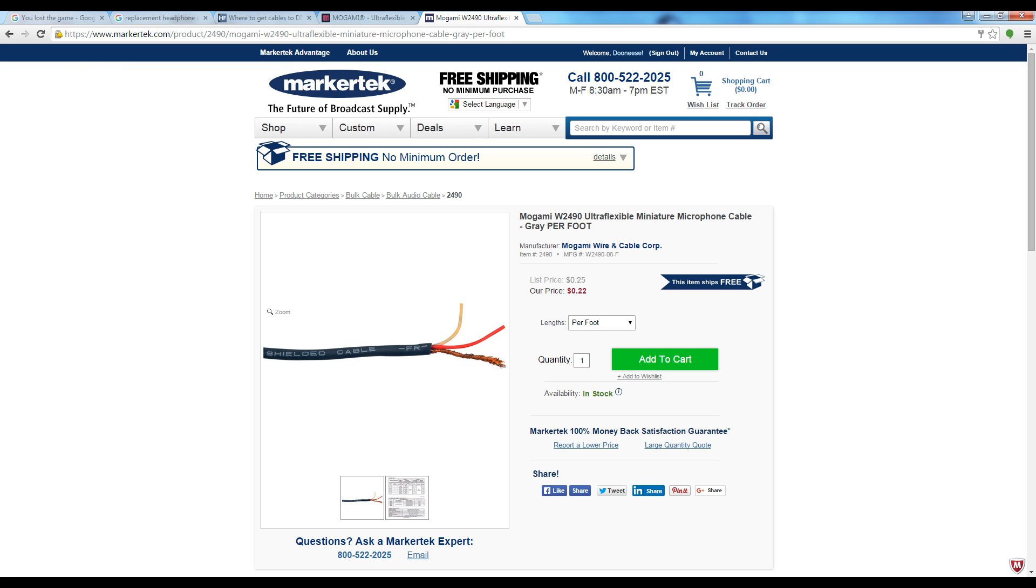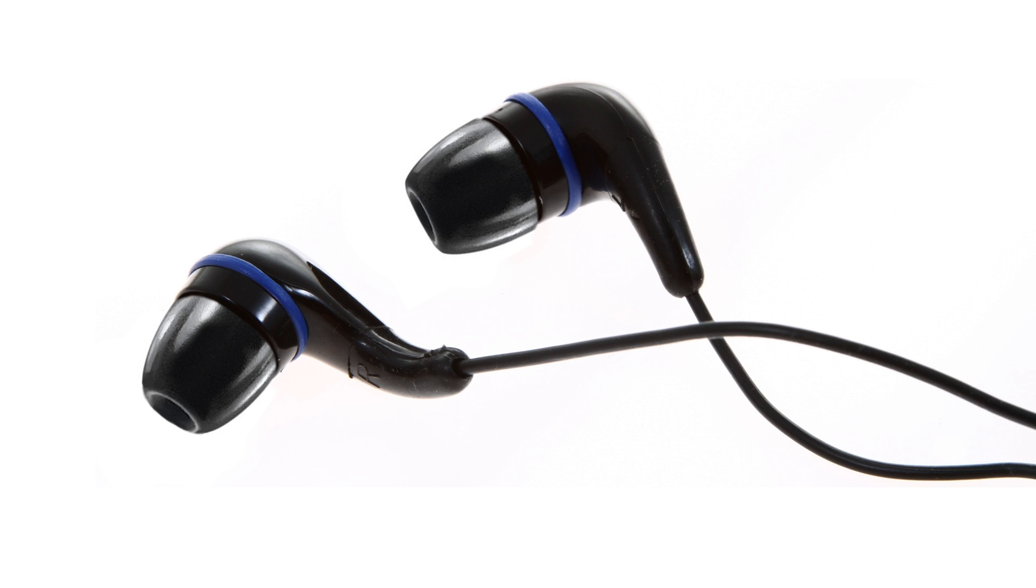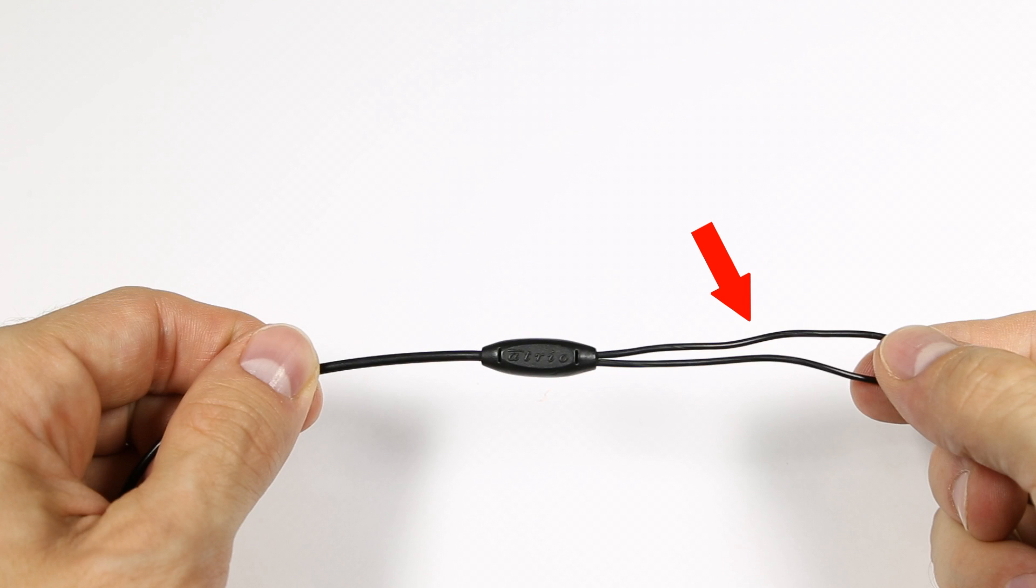Headphones only have three wires or conductors in them: one for the left channel, one for the right, and one for ground. So the left and right earbuds need two wires for their channel and ground, while the main cable needs at least three wires.